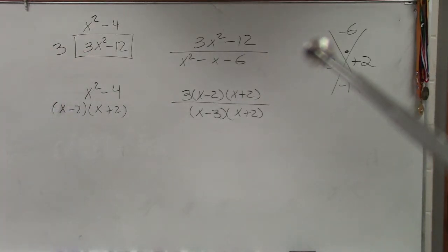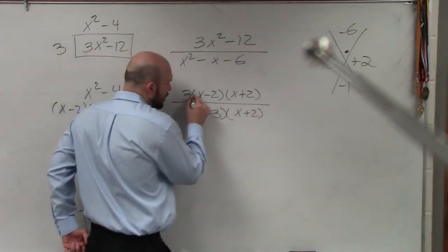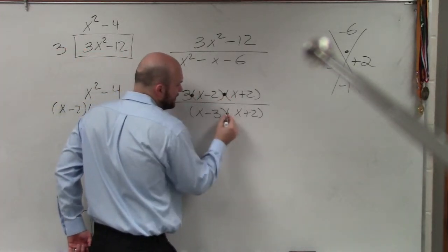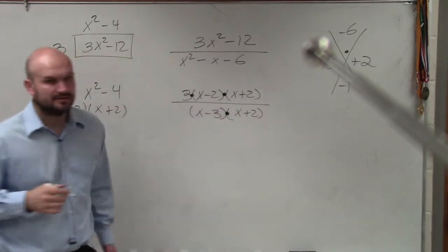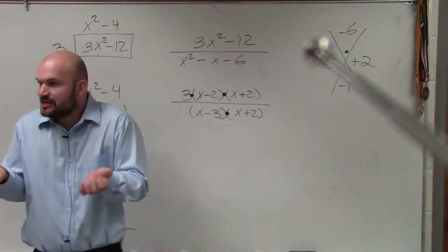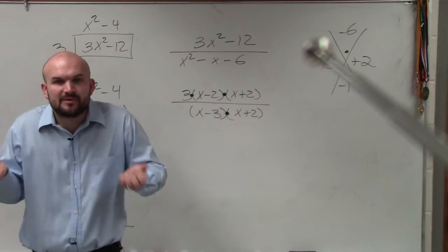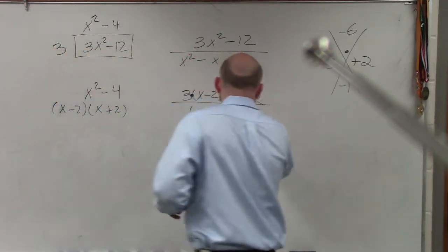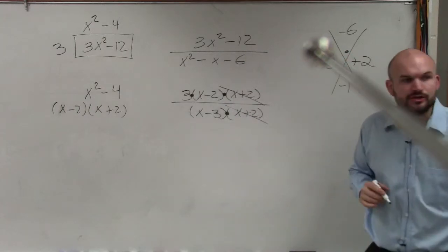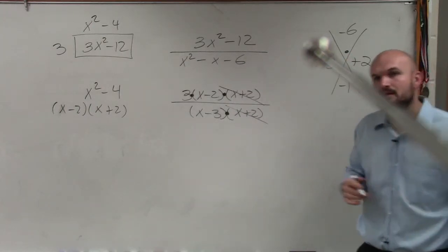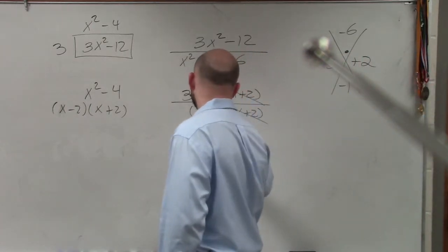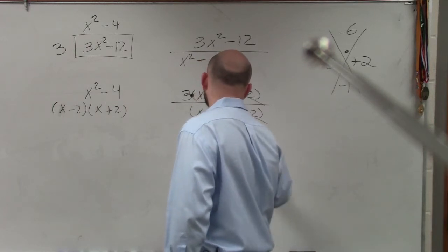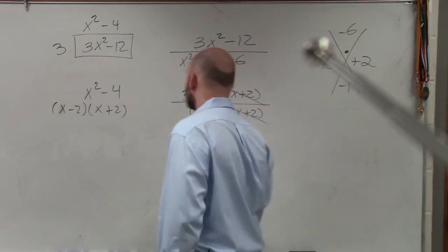Now what I want you guys to see is how all of these are separated by multiplication. Each of those parentheses is now separated by multiplication. Since they're separated by multiplication, we can divide out the same terms that are in the numerator and the denominator. So therefore, we're left with 3(x - 2) over (x - 3).